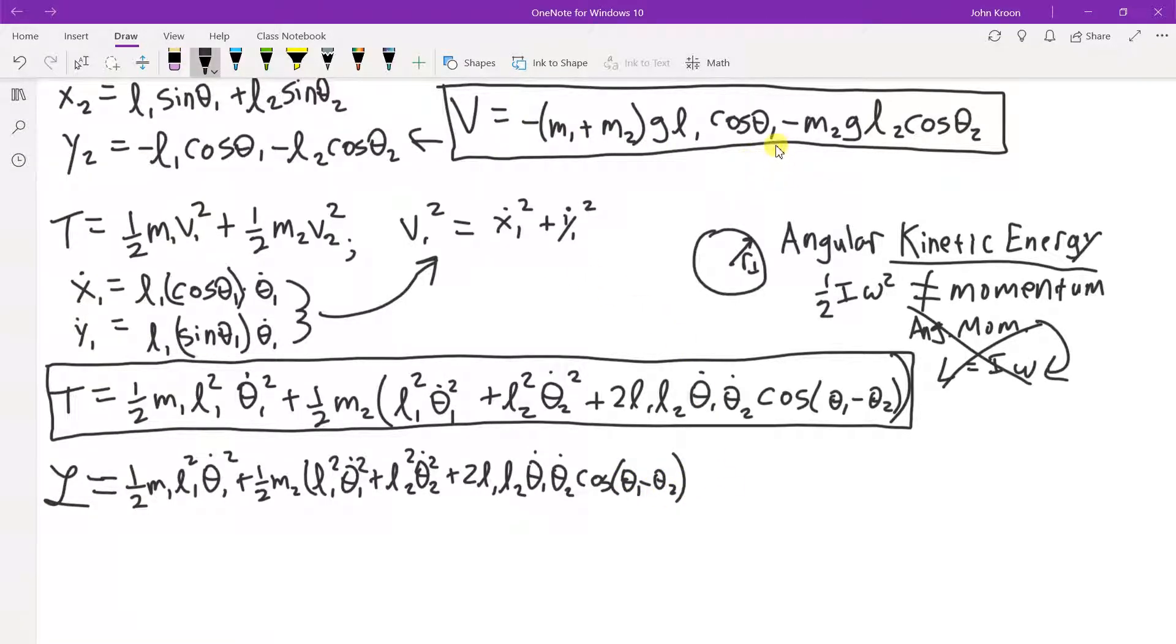Now a minus, a minus, minus a negative is a positive. So we have M1 plus M2 GL1 cosine theta 1 plus M2 GL2 cosine theta 2.